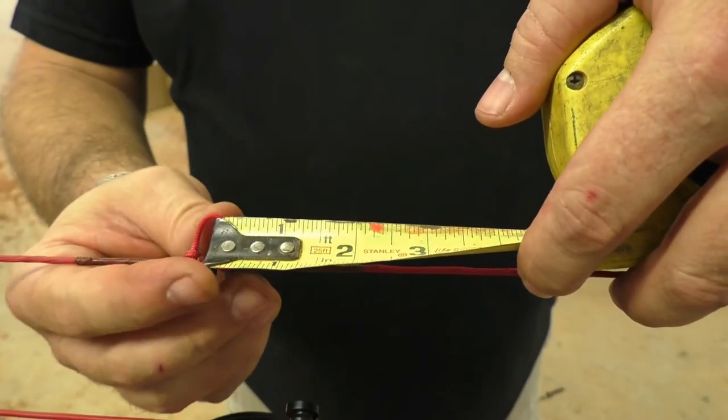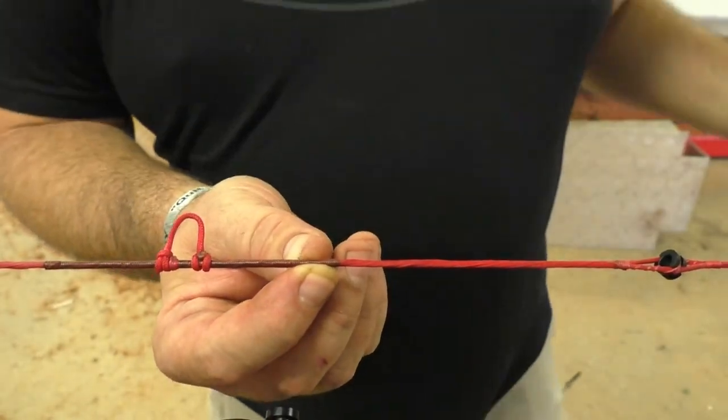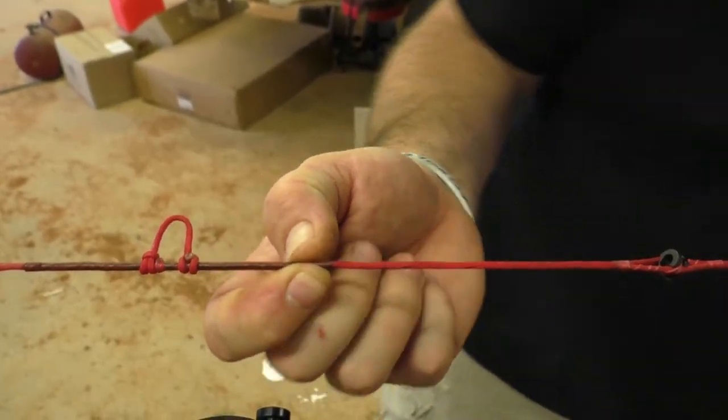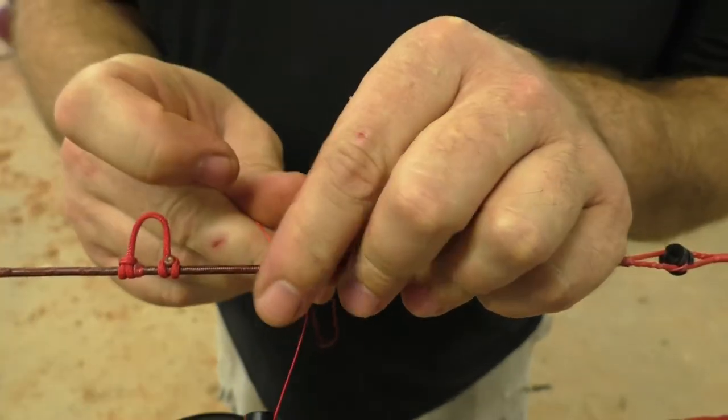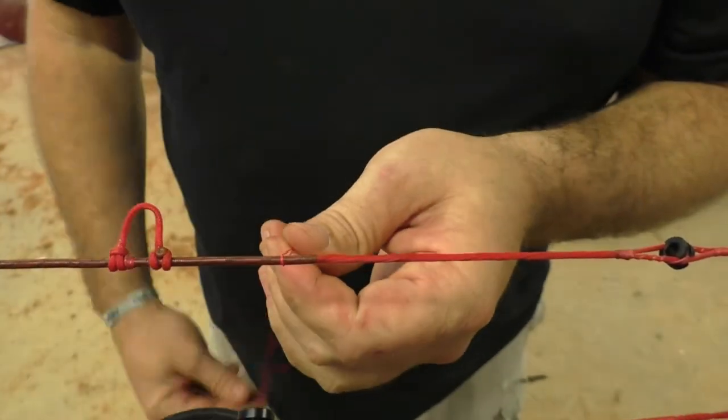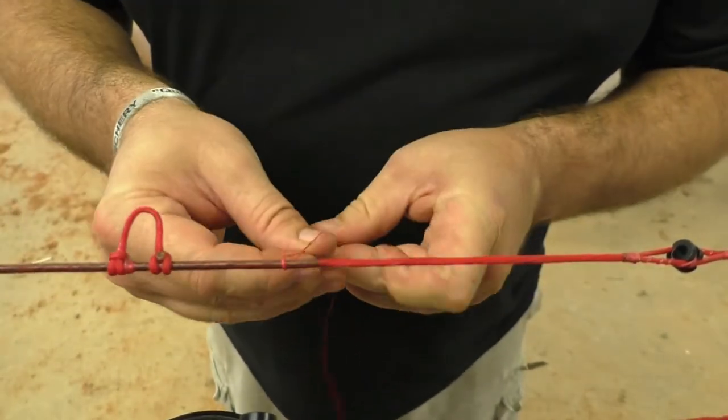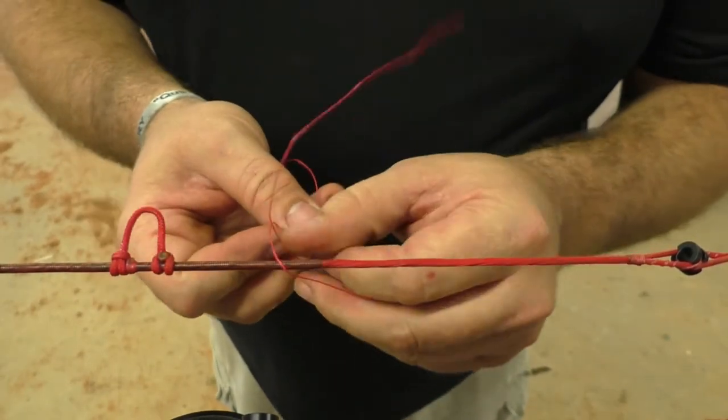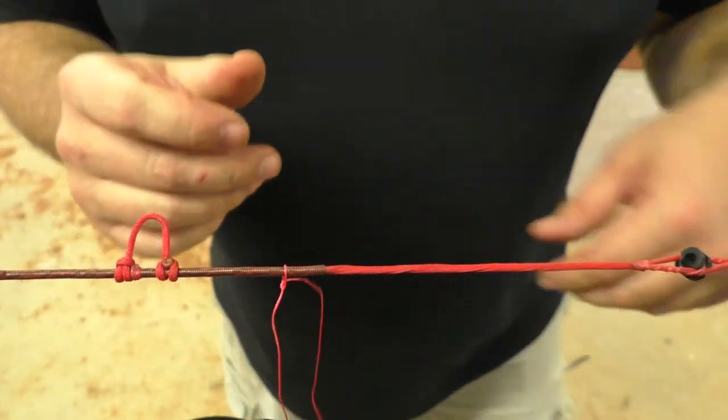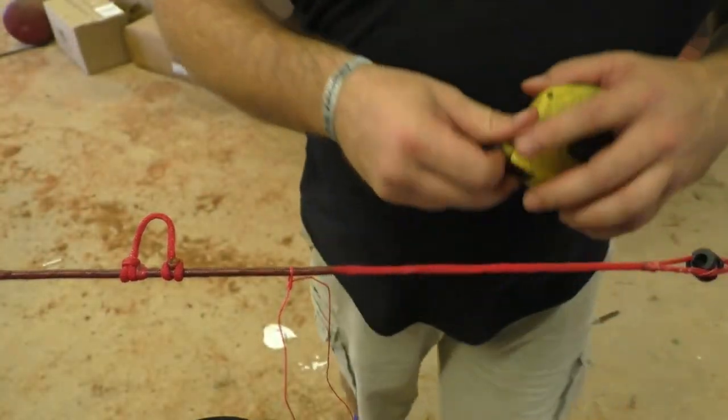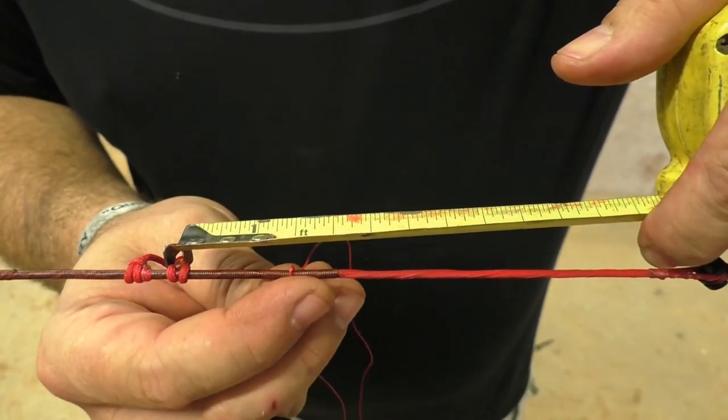Alright, so now we're measuring for that little kisser button I had on there. Not everyone uses a kisser. I just started with this bow actually. I'm just trying to correct a form thing I've got going on. So that was my inch and a half mark. So just like we were doing when we put the collar here in the D-loop, we're going to tie knots on either side of the string here. Pull that in. Before I cinch it down, I'm going to measure it again and get it right where I want it. Alright, so we're going to start it at an inch and a half.